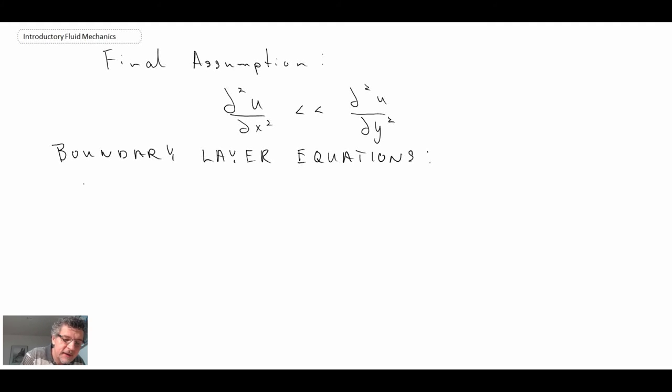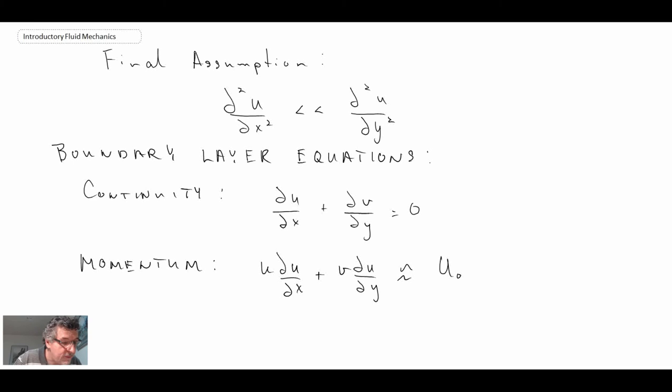The boundary layer equations for continuity and momentum: all we have for momentum is going to be the x-direction equation. This is for steady, so I'm getting rid of the time rate of change term. For the pressure gradient term, we can plug in what we came up with from the external flow. And then for the viscous shear, I'm putting it in terms of shear stress.